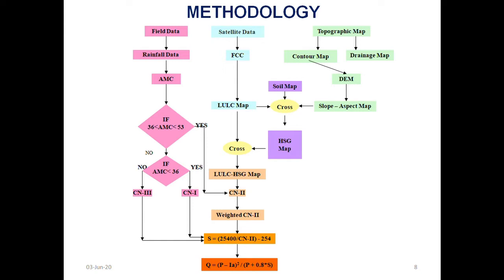Rainfall data is a major input for this estimation. Here AMC also plays a major role in this model. What is meant by AMC is antecedent moisture condition, which is estimated based on the five-day pre-rainfall, means today if there is a rainfall, what is the moisture content before five days of rainfall. That will be estimated and based on that hydrological soil groups are created.